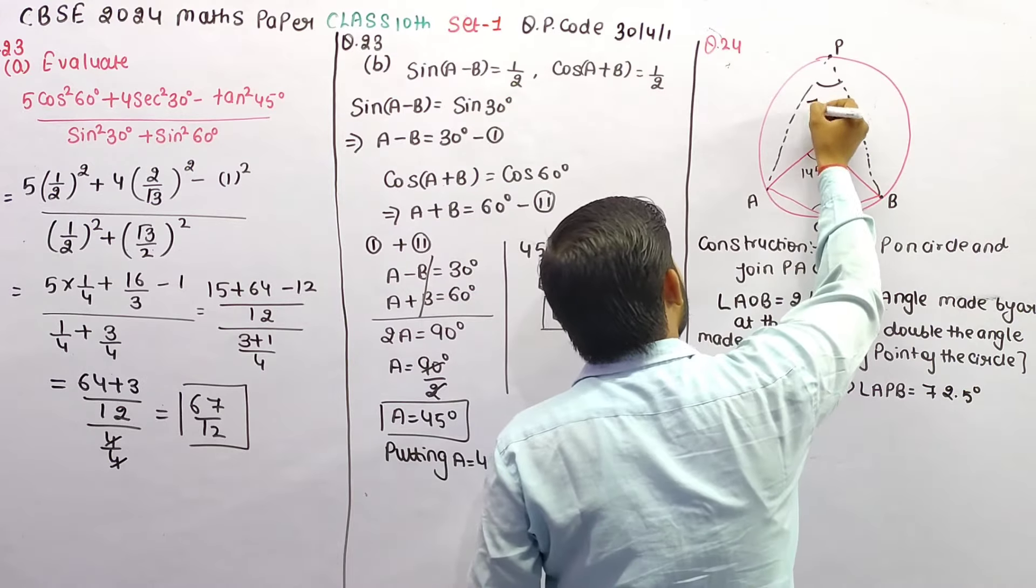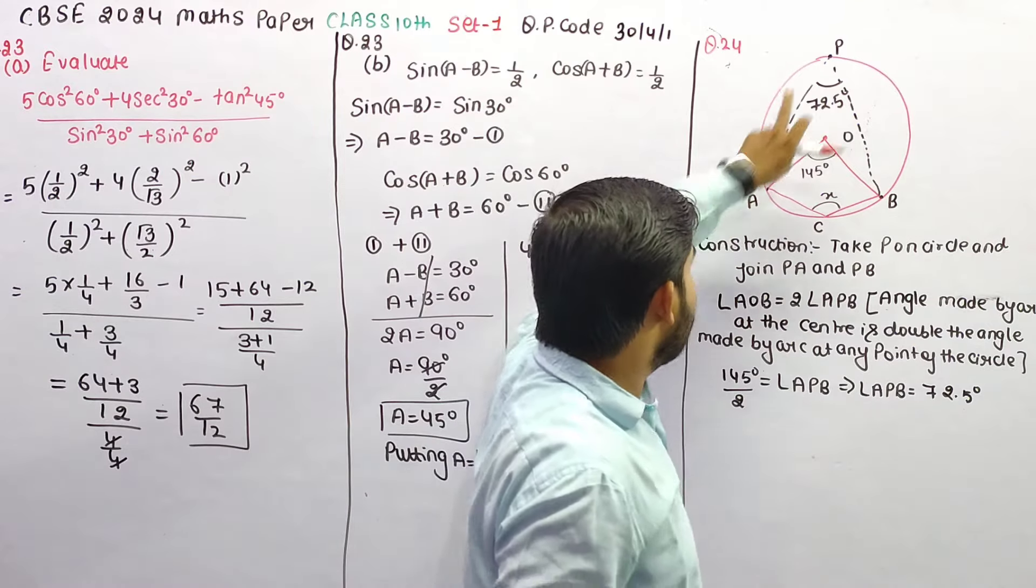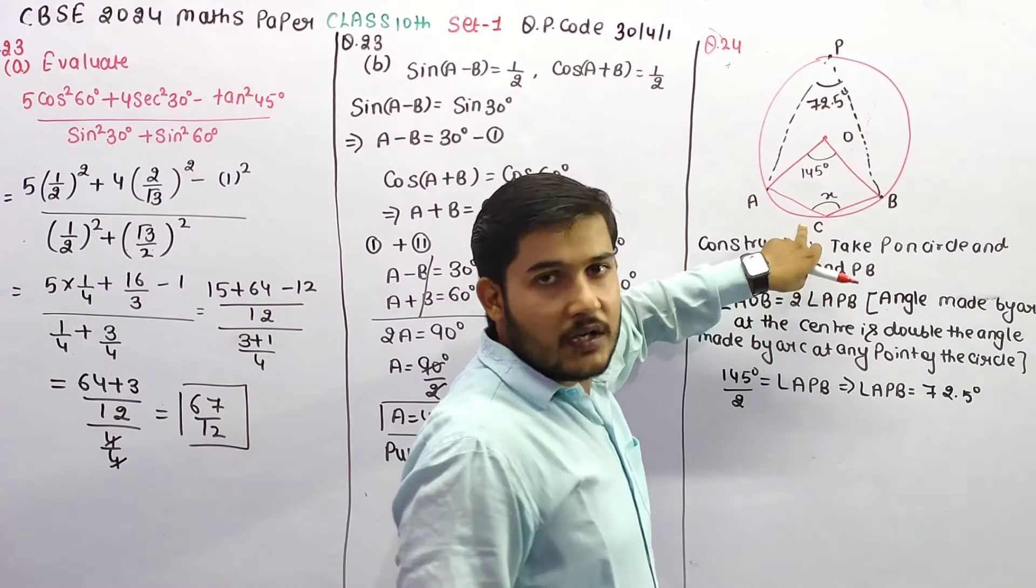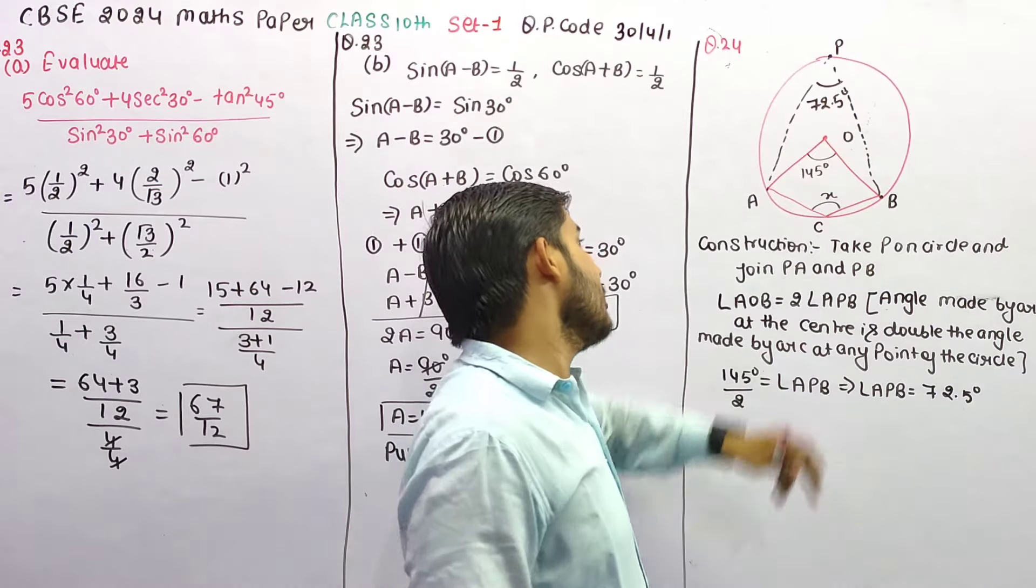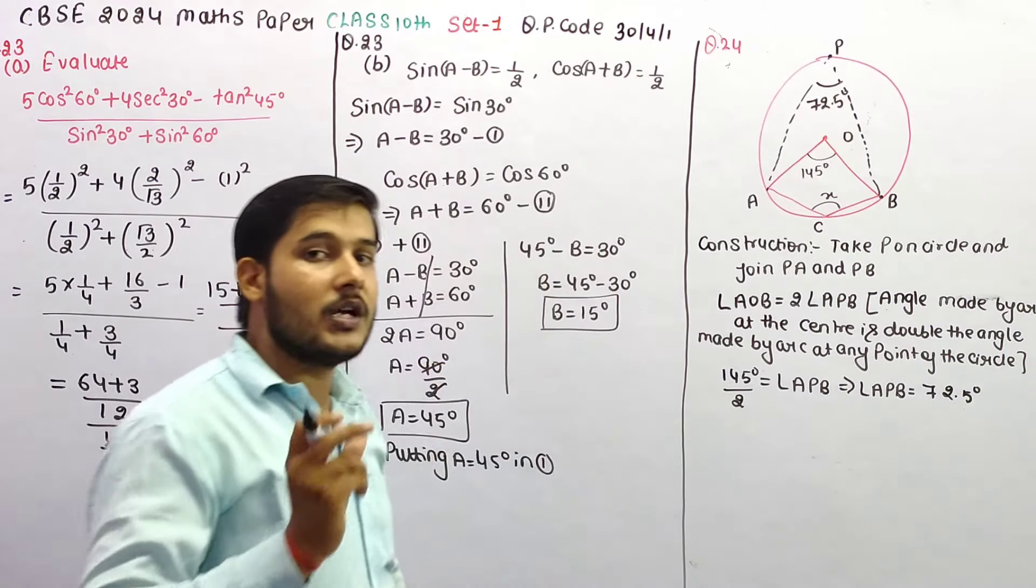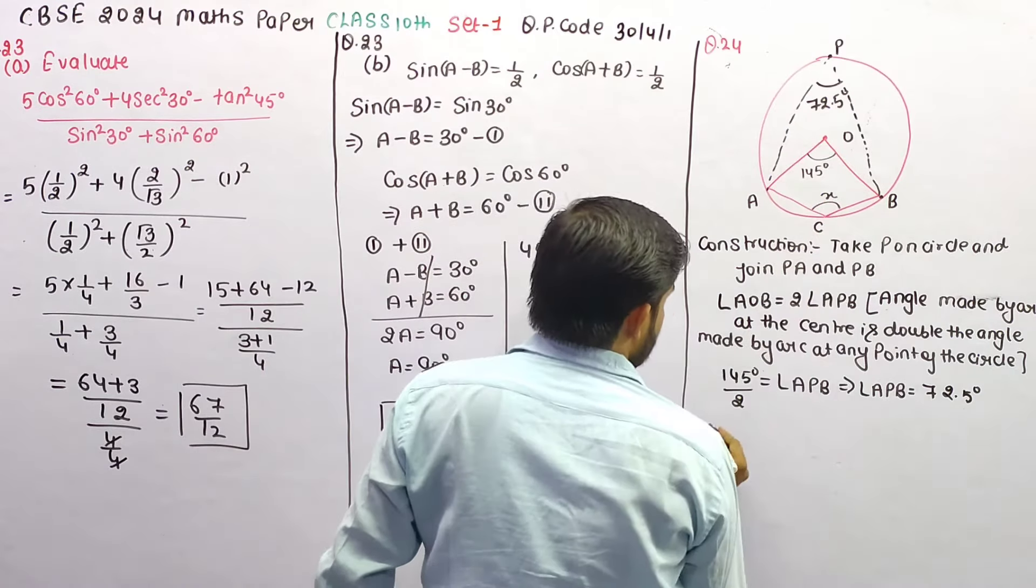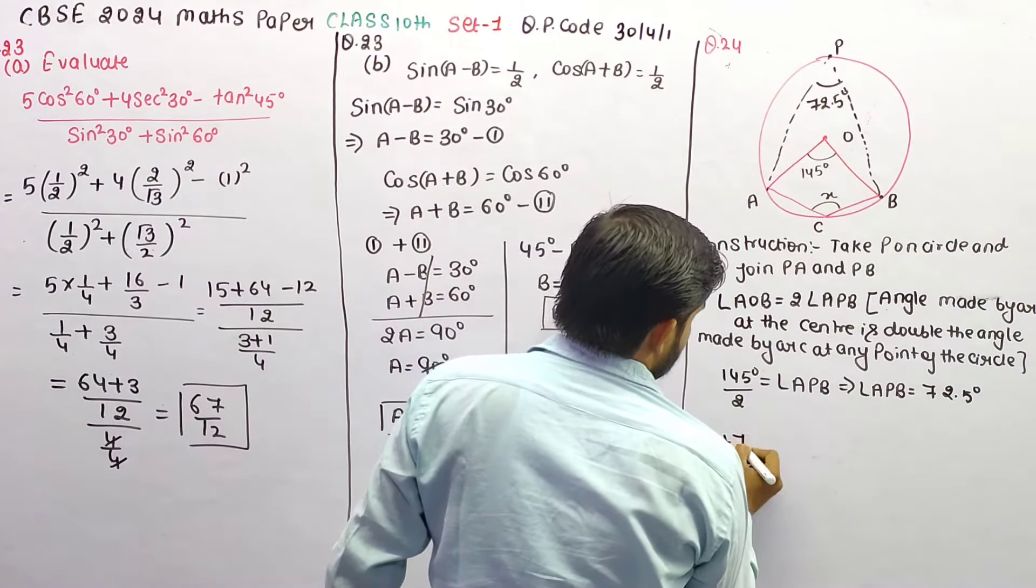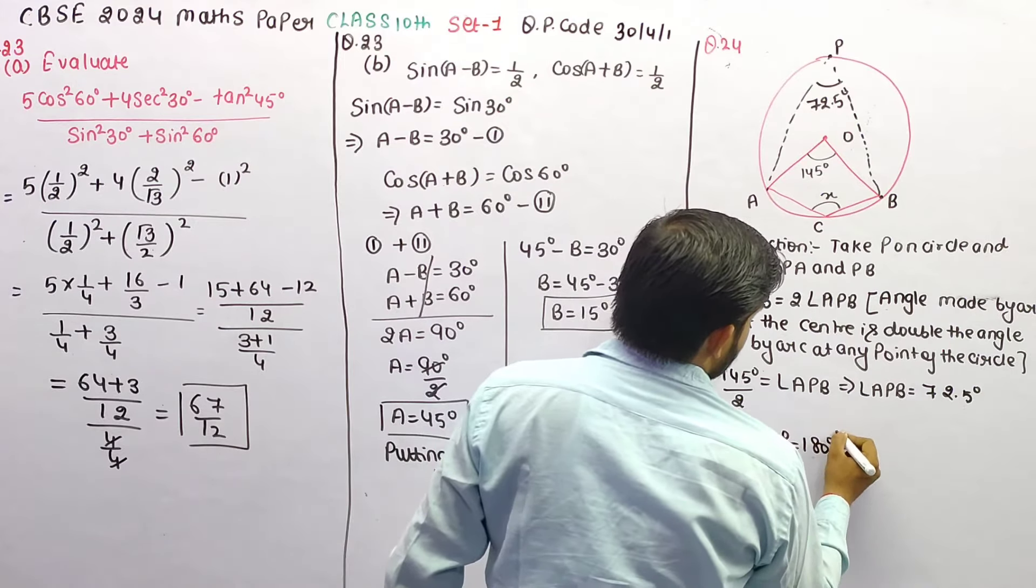And we know that A, P, B, C is a cyclic quadrilateral and its opposite angles are supplementary, that means their sum is 180 degree. So X plus 72.5 degree is equal to 180 degree.